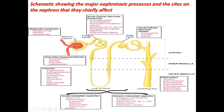This figure shows the main nephrotoxic processes and the sites on the nephron that they chiefly affect. Different toxicants target different nephron segments.